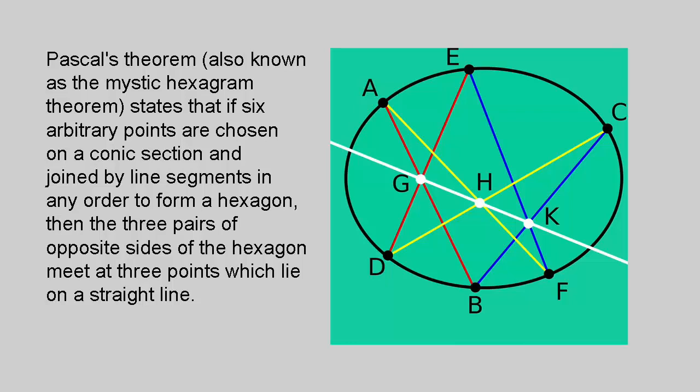The line on which the three intersection points lie is called the Pascal line of the hexagon. A special case is when the conic degenerates into two lines. The theorem still holds, but is then usually called Pappas' theorem.